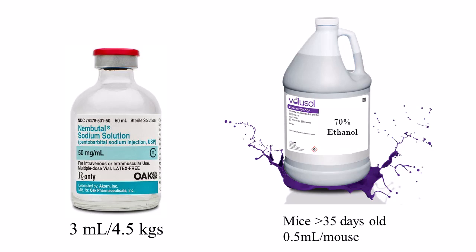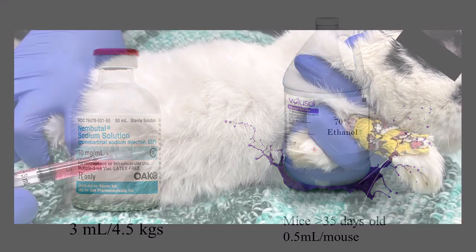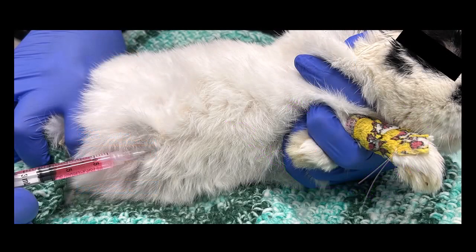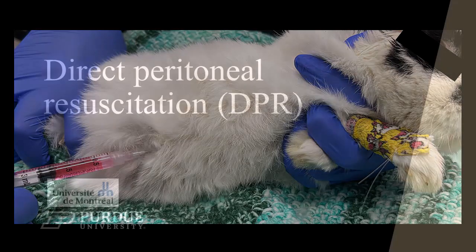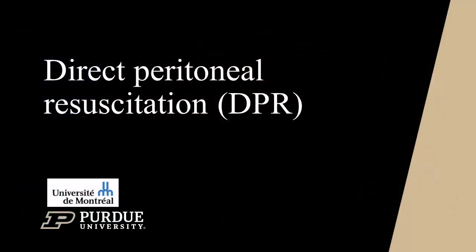Mice over 35 days of age can also receive 70% ethanol intraperitoneally to facilitate euthanasia. Approved sites for IP injection are the periumbilical region or right ventral abdomen, avoiding the GI tract.